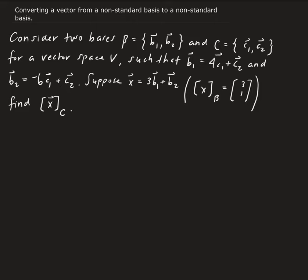All right, so we have a vector that's defined, or we have a vector in terms of beta, and we want to convert that vector in terms of C.